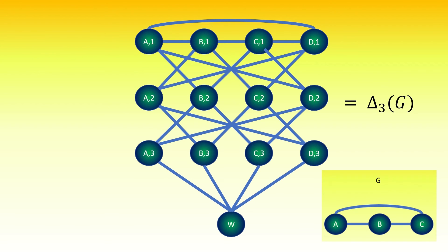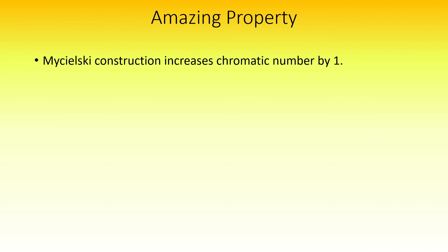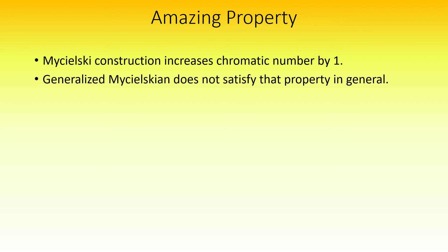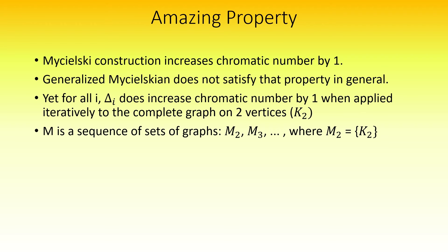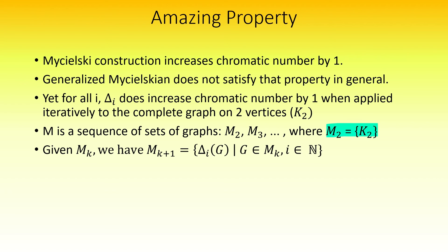I want to show you something really neat about this construction. Recall that applying the Michelsky construction increases the chromatic number of a graph by 1. The cone over a graph does not always have this property. However, the property does hold for cones applied iteratively to the complete graph on two vertices. In fact, we can generate a sequence m of sets of graphs starting with index 2, where m sub 2 contains just the complete graph on two vertices. Then we create a recursive formula: given m sub k, we define m sub k+1 to be the set of all delta sub i of g, where g is any graph in m sub k and i is any positive integer.